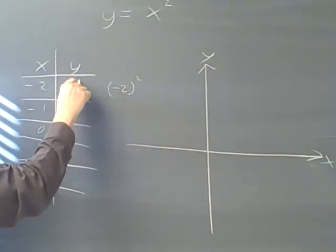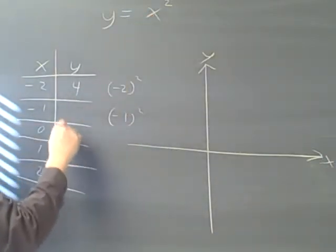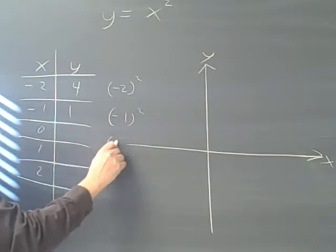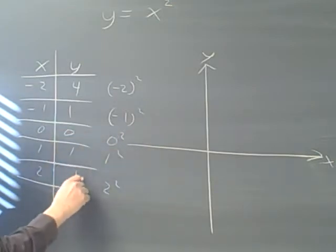If I put negative 1 for x, I will get positive 1. Of course, 0 squared is 0, 1 squared is 1, and 2 squared is 4.